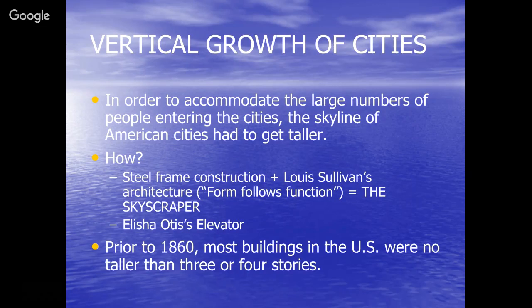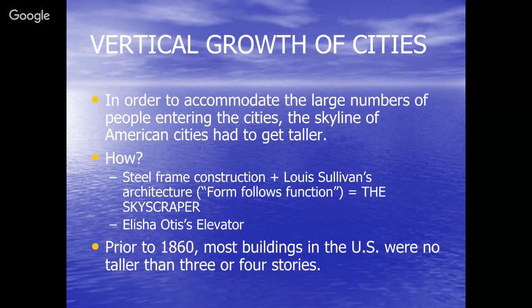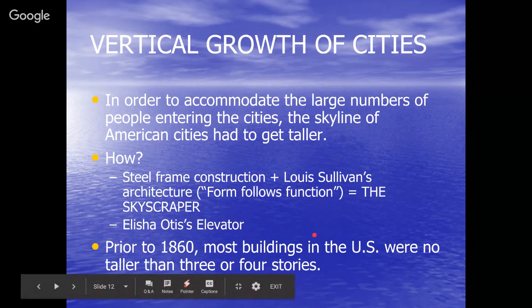How did the skyline get taller? Technology and innovation: steel frame construction. Carnegie Steel was going to be the builder of cities in the Gilded Age — steel used not only for railroads but also for building construction. Add steel frames to Louis Sullivan's architecture and you get the skyscraper. These tall buildings aren't really practical without the elevator, so Elijah Otis invented the elevator, making these skyscrapers much more practical.